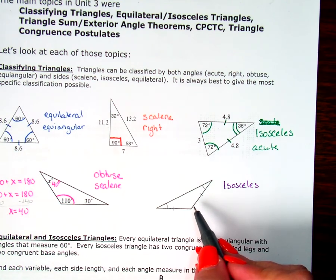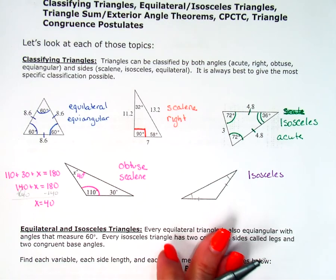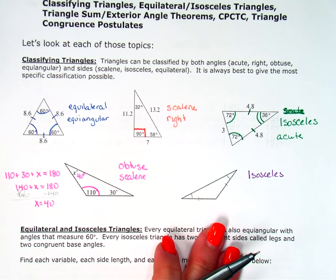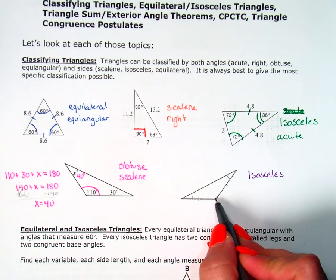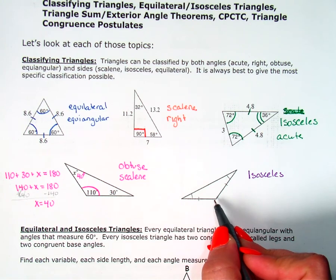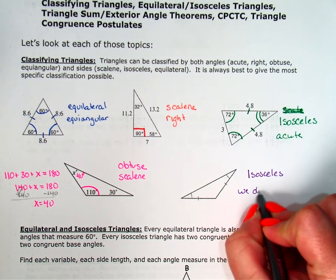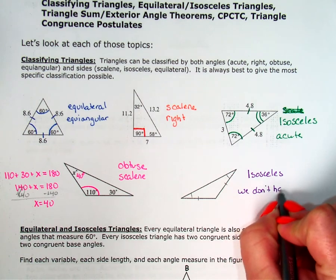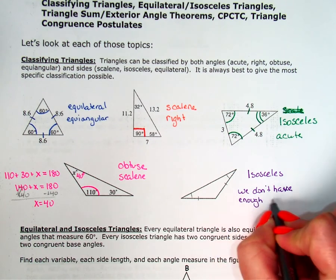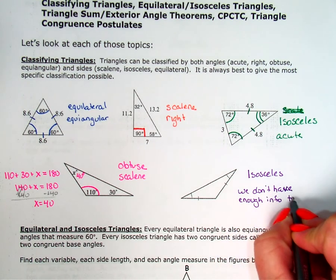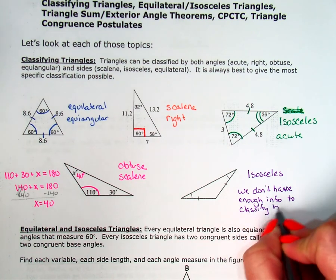And I can see this angle here looks like it's obtuse. However, I can't just assume that it is because it doesn't tell me anywhere that my picture is to scale. So if it doesn't tell me my picture is to scale, I have to assume it's not to scale, which means even though this one looks like it's obtuse, I can't really for sure know it's obtuse. So that means we don't have enough information to classify by angles.